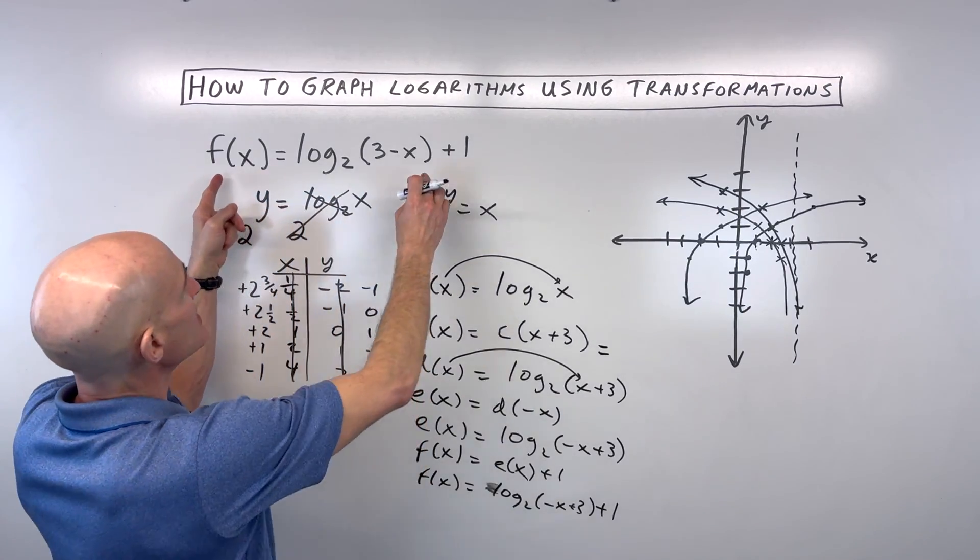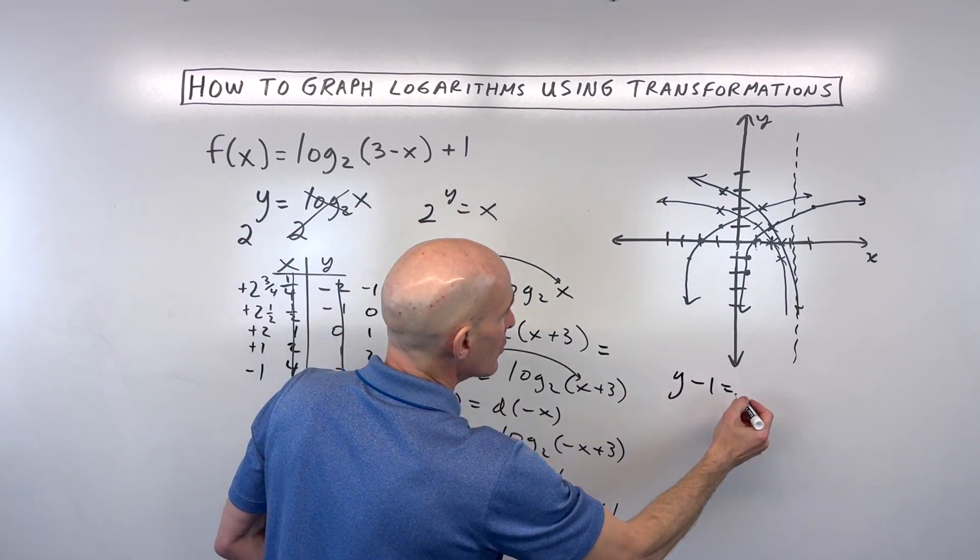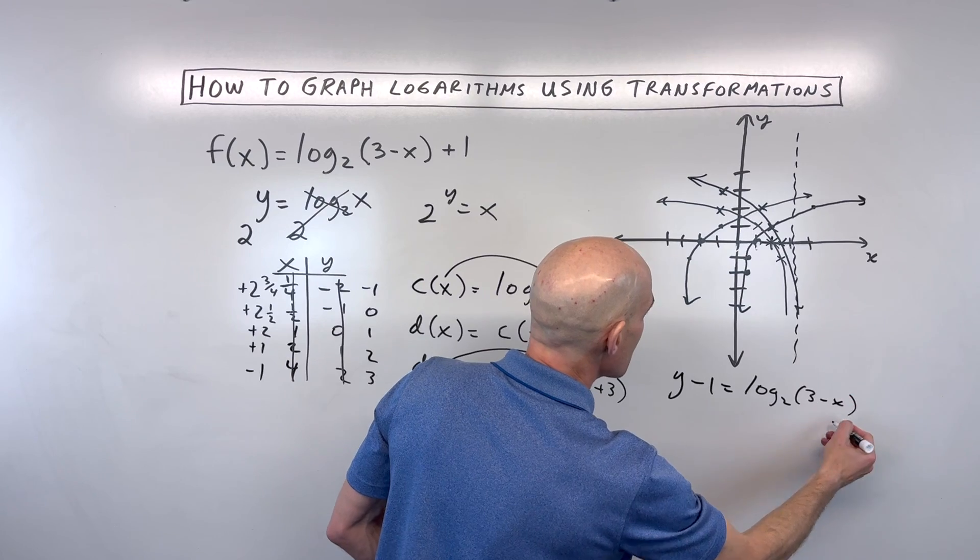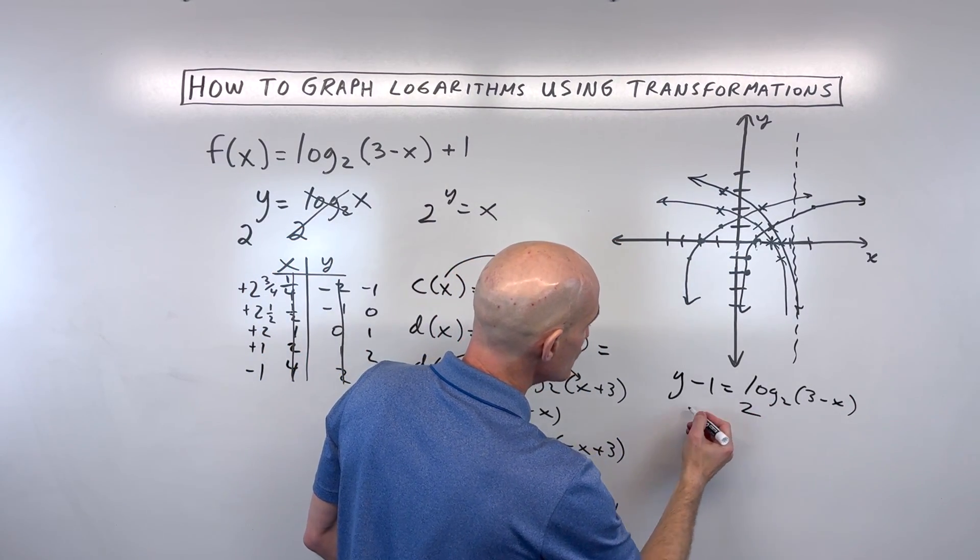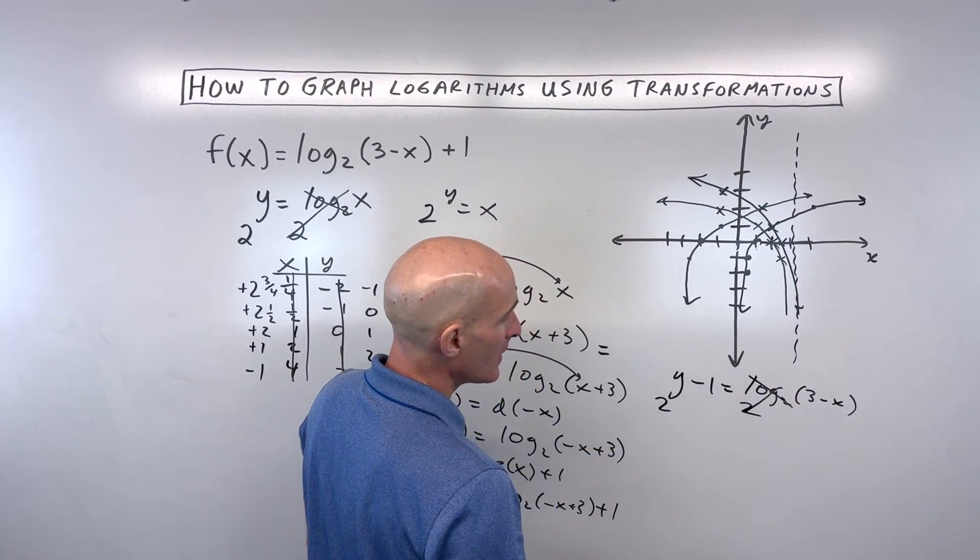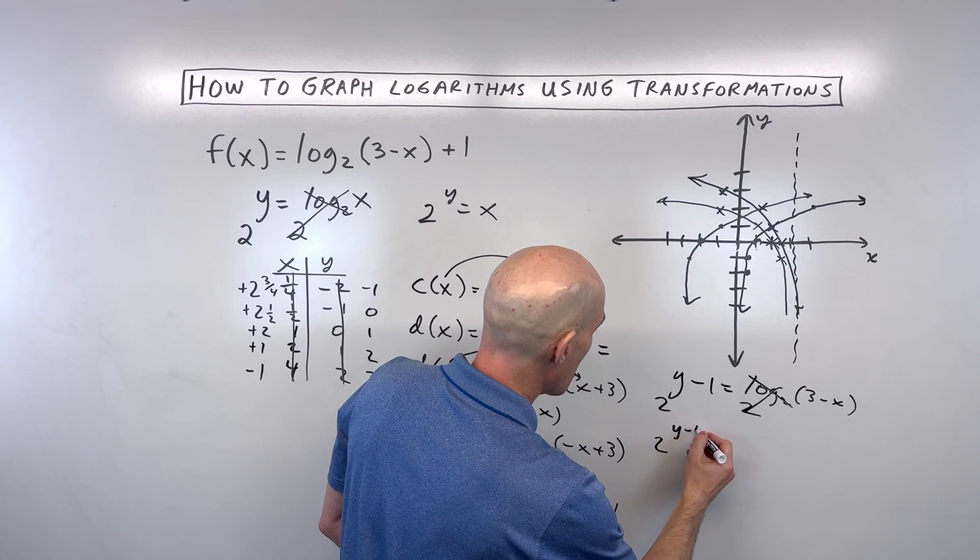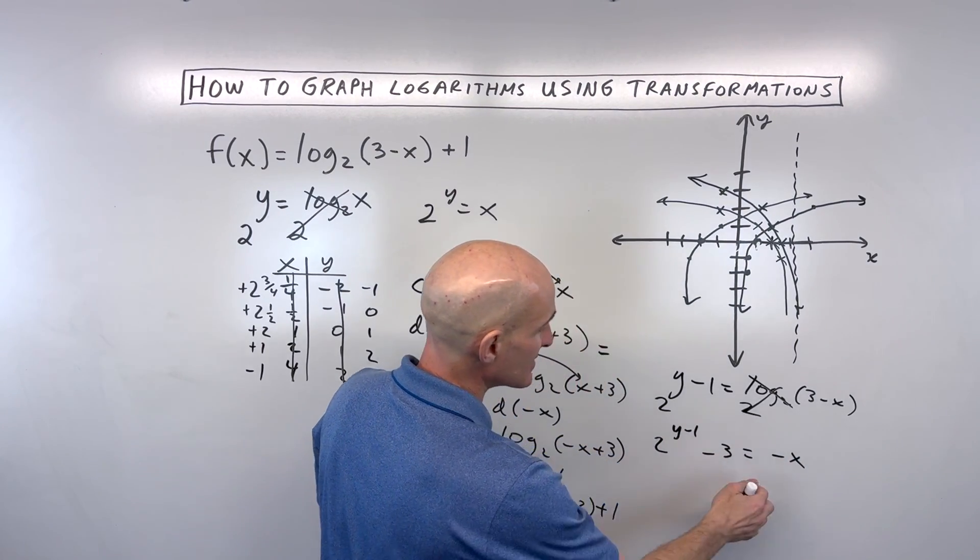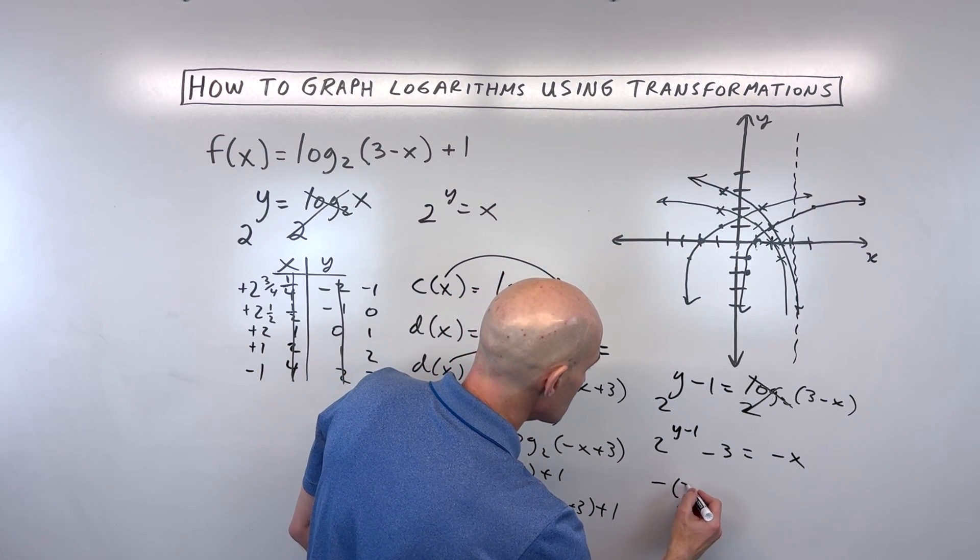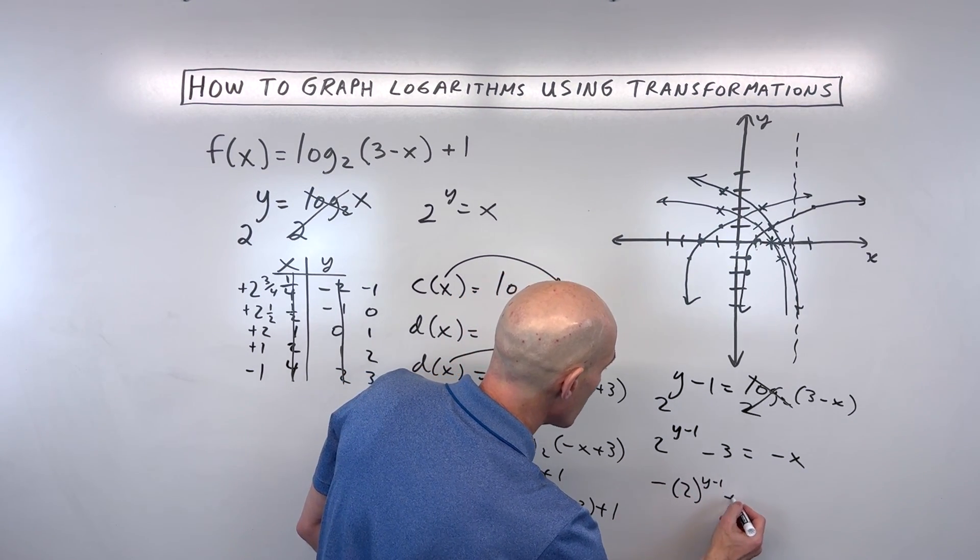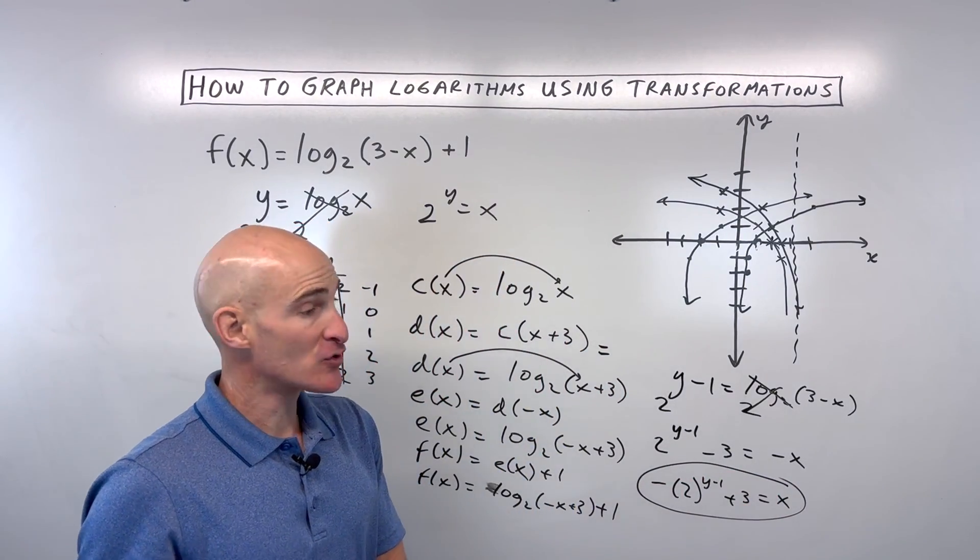So what I would do is I would subtract 1 here first. So I would say y minus 1 is equal to log base 2 of 3 minus x. Then what I would do is I would exponentiate both sides. This is log base 2. So I'd raise both sides using that base 2. And then I would subtract 3. So that would be 2 to the y minus 1 minus 3 is equal to negative x. And then multiply both sides by negative 1. So this would give us negative 2 to the y minus 1 plus 3 is equal to x. So we've rewritten in the exponential form.